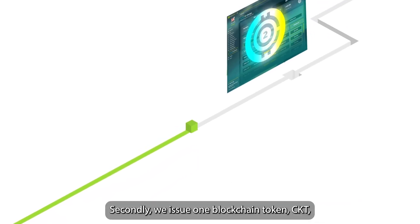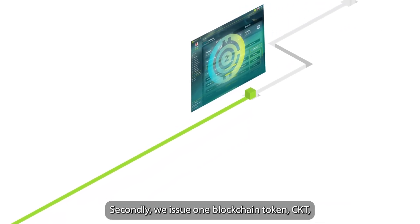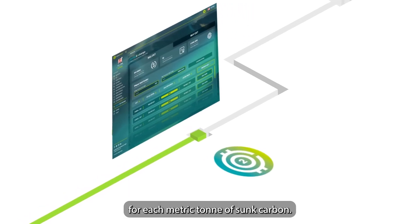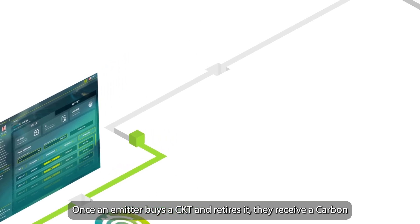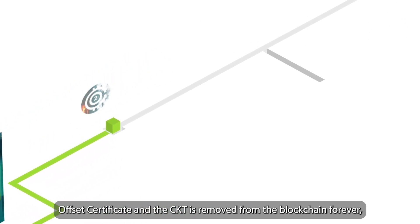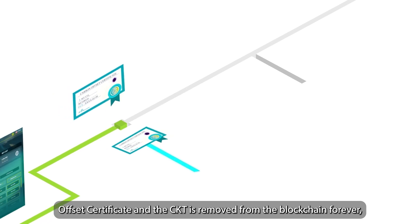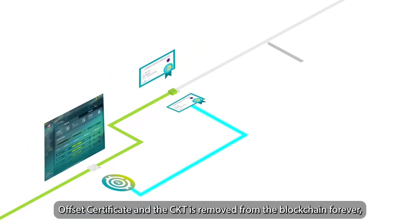Secondly, we issue one blockchain token, CKT, for each metric ton of sunk carbon. Once an emitter buys a CKT and retires it, they receive a carbon offset certificate, and the CKT is removed from the blockchain forever, never to be traded again.